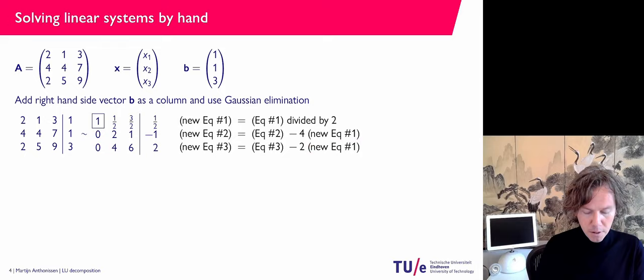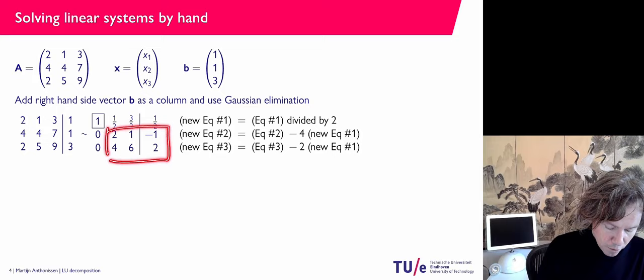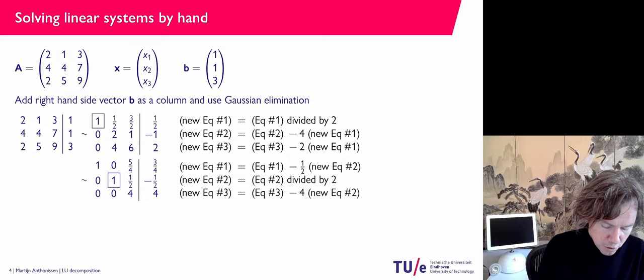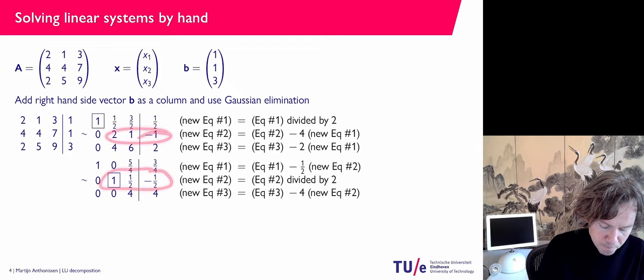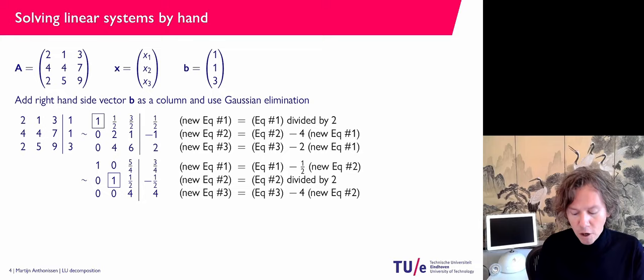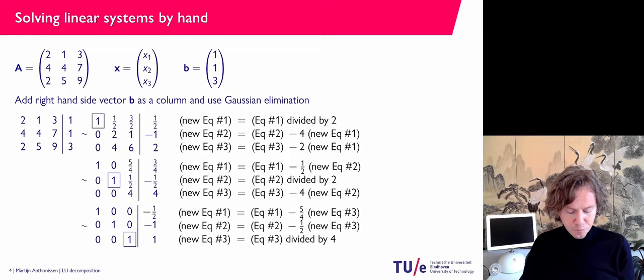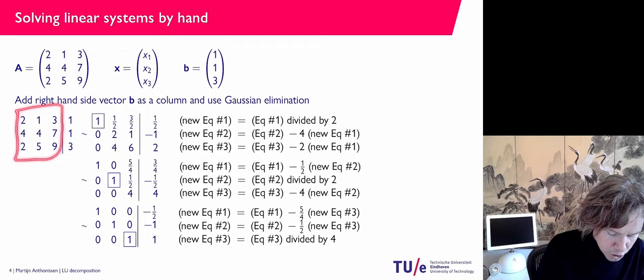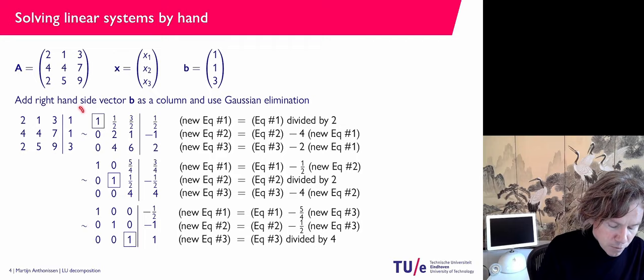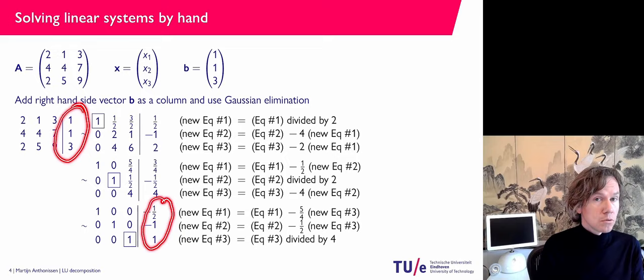Next we look at the lower two-by-three block. We would like this two to become a one, so again we divide by two. Then we use this new second row to create zeros at the remaining positions. After doing that correctly, we divide the last row by four to get a one there too. Now the original matrix A has been transformed into an identity matrix, and the right-hand side vector has changed accordingly — that is the solution: minus one-half, minus one, one.